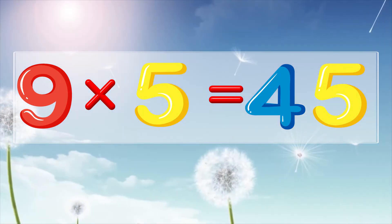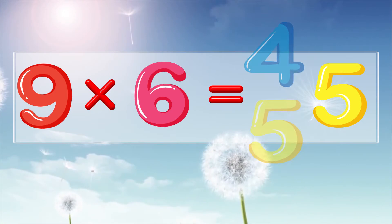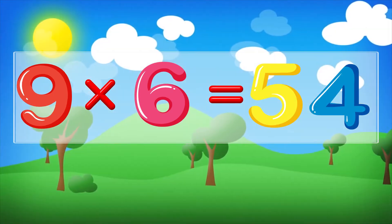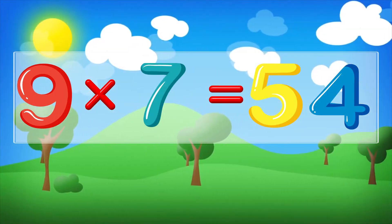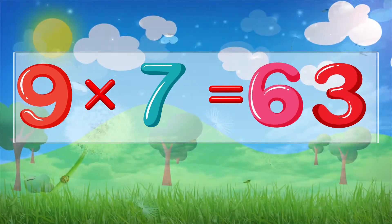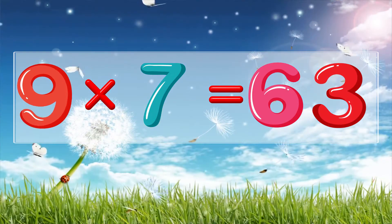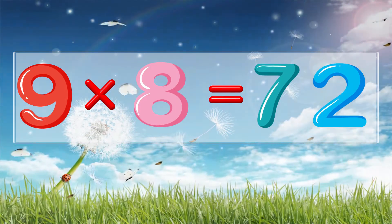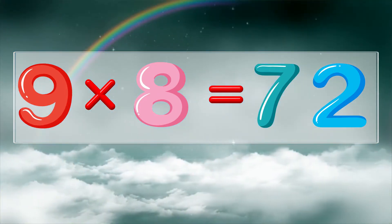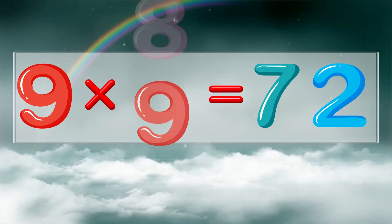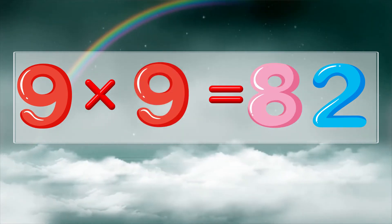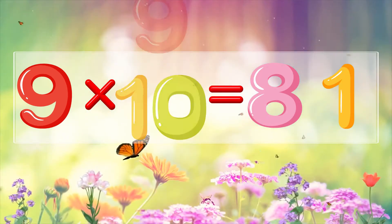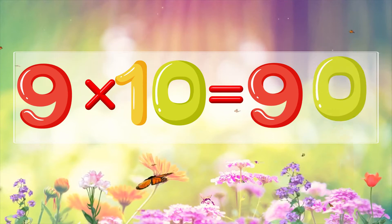Nine times six is fifty-four. Nine times seven is sixty-three. Nine times eight is seventy-two. Nine times nine is eighty-one. Nine times ten is ninety.